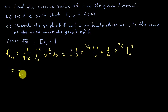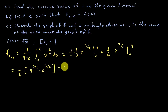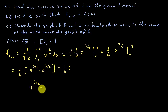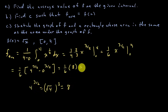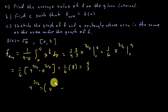That gives us 1 sixth times 4 to the three halves minus 0 to the three halves. Remember, 4 to the three halves is the square root of 4 cubed, which is 8. So that's 1 sixth times 8, which equals 4 thirds. The average value is 4 thirds.